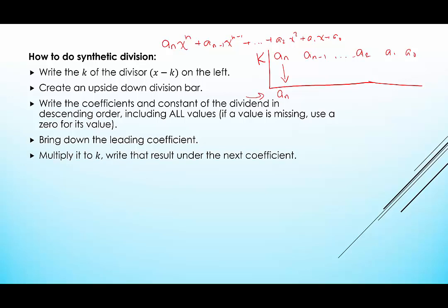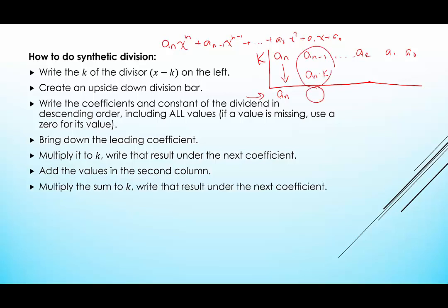Then we're going to take that and multiply it to k. So we take a sub n, multiply it to k, and write it under the next coefficient. So we're going to say a sub n times k. Then we add the values in the second column. We would combine these two numbers and put the sum right here.